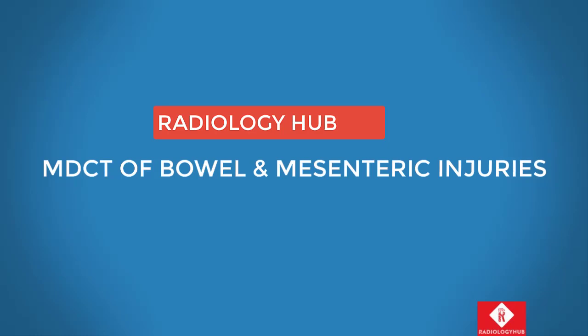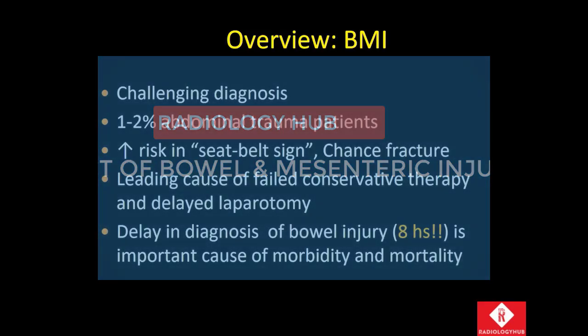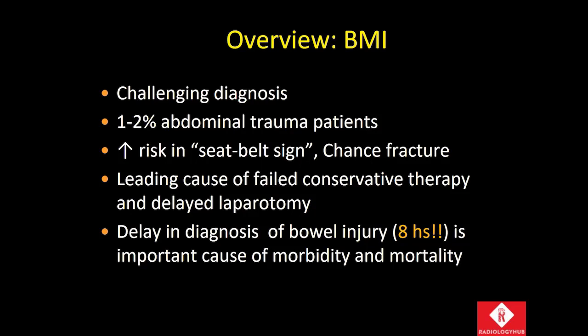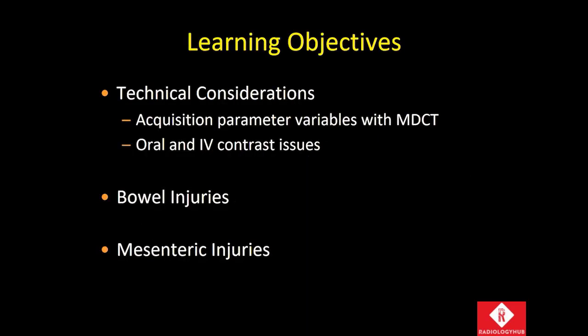I will be talking about CT of bowel and mesenteric injuries. Bowel and mesenteric injuries are not easy to diagnose. They're not common, occurring in only about 2% of blunt abdominal trauma patients, and they are slightly more commonly seen in patients who have the seatbelt sign or who suffer chance fractures. It is the leading cause of failed conservative therapy and delayed laparotomy in blunt trauma patients. A short delay in diagnosis of not more than 8 hours is an important cause of subsequent morbidity and mortality. We will cover some aspects about the technique of CT for these patients and then direct aspects about bowel injuries and mesenteric injuries.